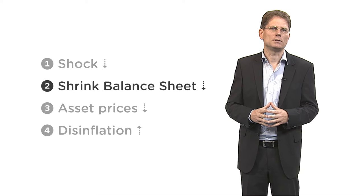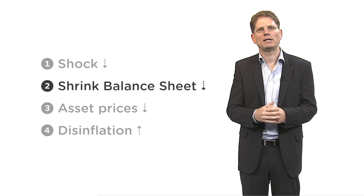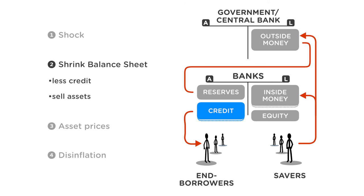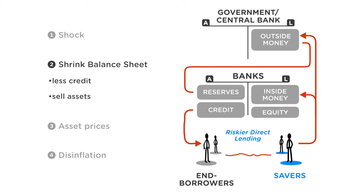The second step is the bank's response. The high leverage ratio caused by the adverse shock triggers a response by the banks. They try to bring it back down by shrinking their balance sheet. First, they will extend less new credit to the end borrowers, who then can buy fewer homes and invest in fewer machines. Second, banks will also try to sell off old loans, old credit. If banks are hit, then they all would like to sell their assets at the same time. But if no bank wants to buy, who would be willing to buy these assets? The only ones potentially willing to buy are the savers directly. However, savers are not as good as banks at enforcing the repayment of loans and cannot diversify as well. Hence, they are not willing to pay much for these assets, and prices will drop.